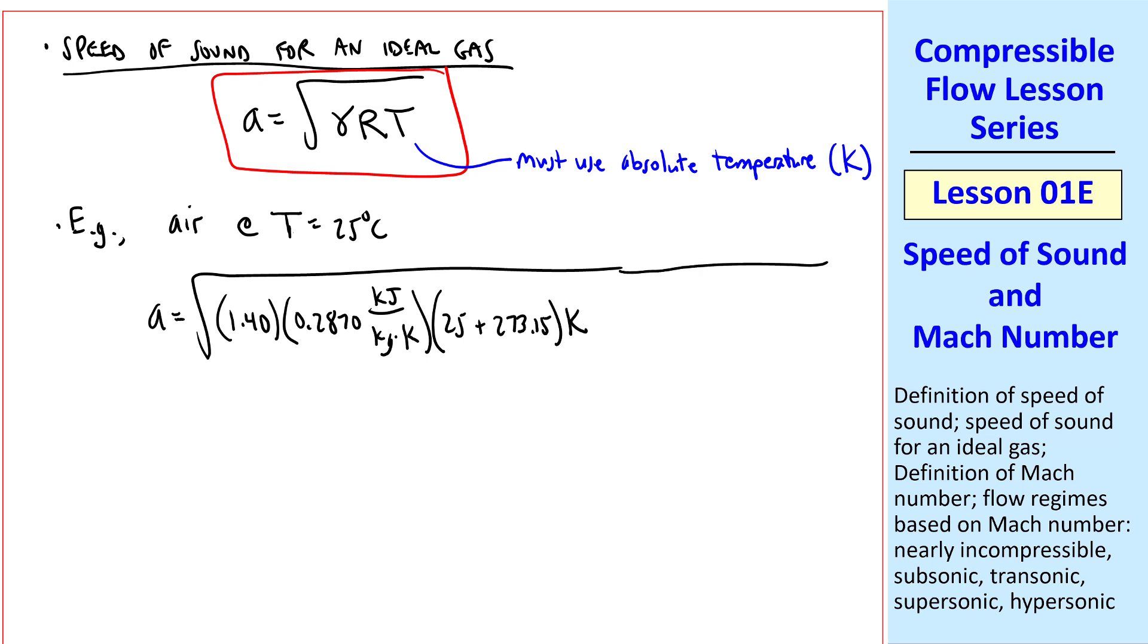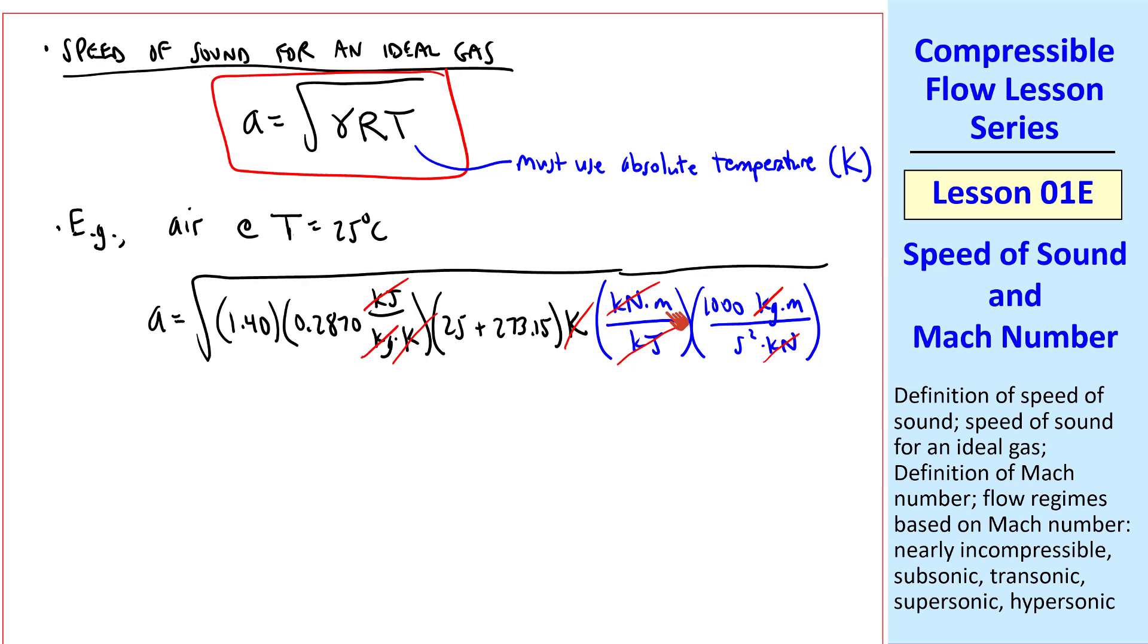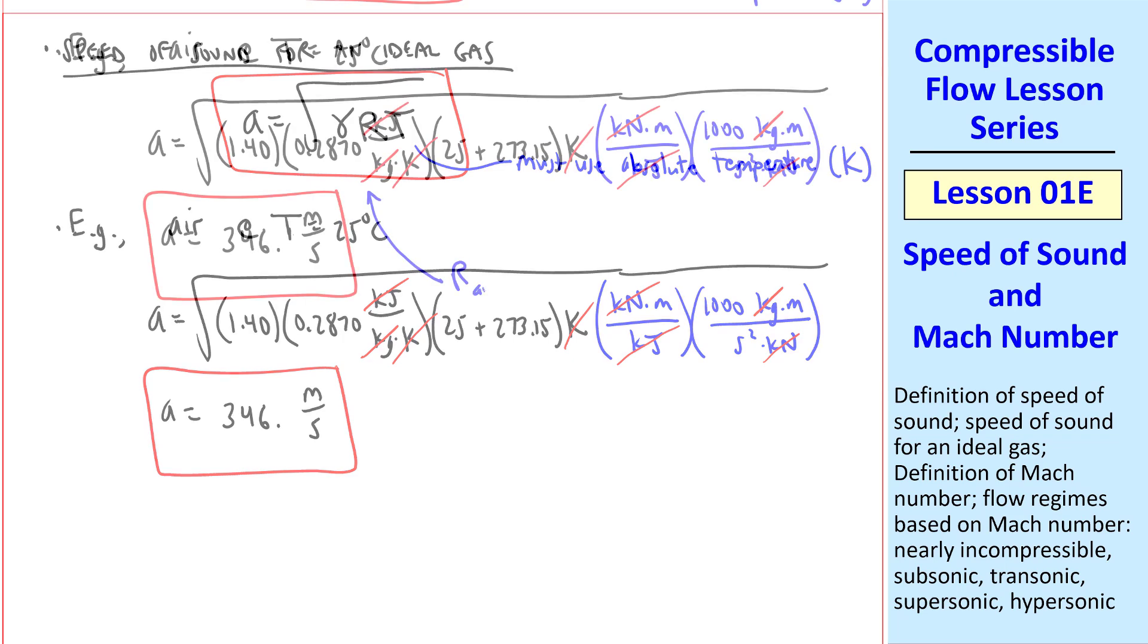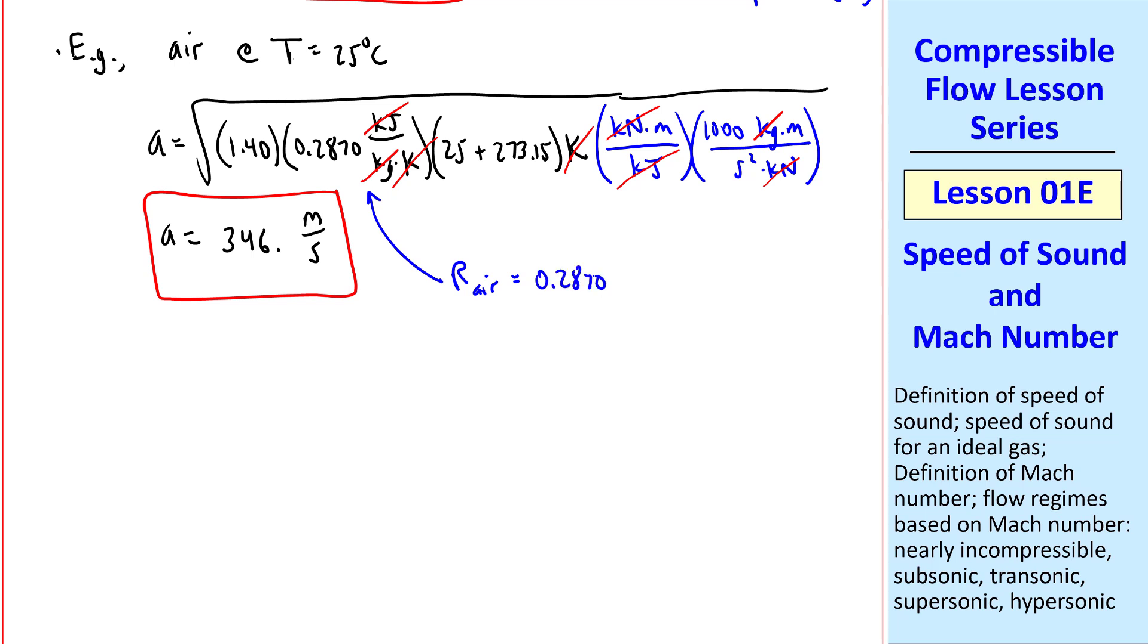And then T would be 25 plus 273.15 to convert to Kelvin. And we'll need some unity conversion factors. Namely, a kilonewton meter is a kilojoule. Canceling out kilojoules. Note that K's cancel out here. And there's 1,000 kilogram meter per second squared kilonewton. This gets rid of kilogram and kilonewtons. And we end up with meters squared over second squared. But a square root over the whole thing gives us meters per second, which is what we want for a speed. So to three digits I get A is 346 meters per second.